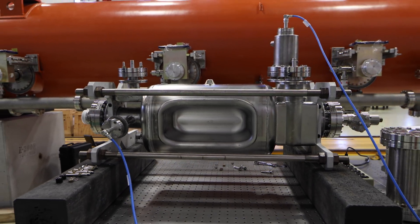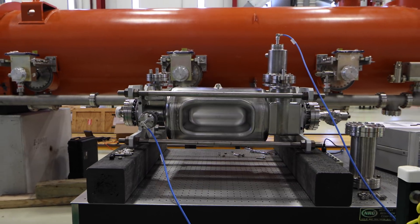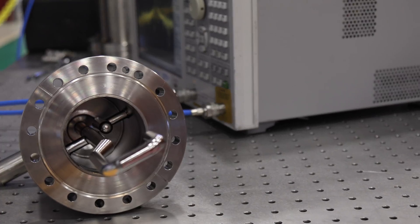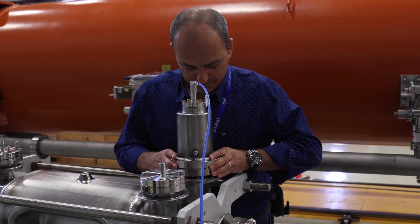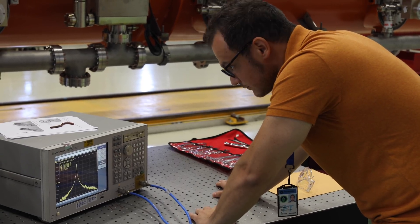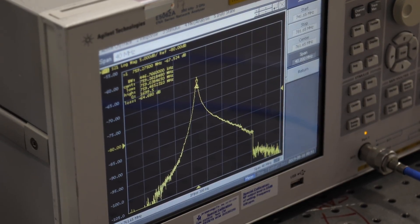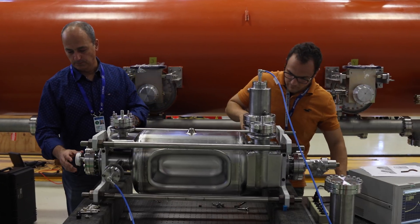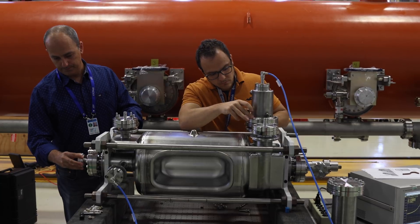Fermilab is also working on what are called crab cavities, which are accelerator components that briefly alter the direction of the two beams of protons that are circulating in opposite directions to ensure that the beams are hitting head-on. This technology will also increase the luminosity of the LHC beams.